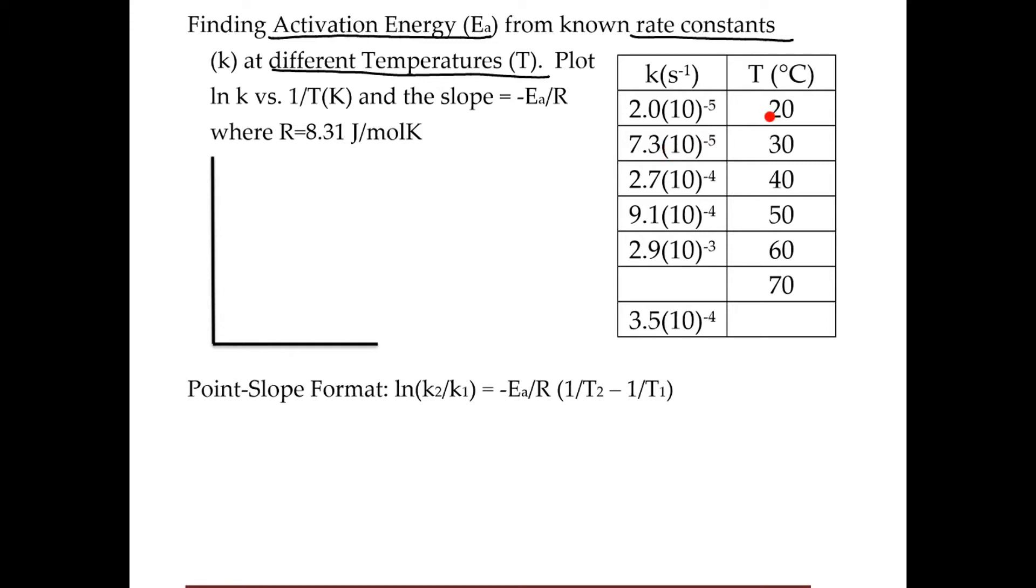So if you could find a whole bunch of temperatures and a whole bunch of rate constants, you can find a relationship that allows you to calculate the activation energy. Now, the way to do that is to plot ln k versus 1/T where T is in Kelvin, and you're going to get a graph that looks like this, which is supposed to be a straight line, and when you find the slope of this line,